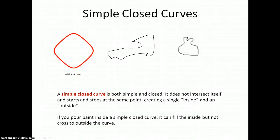You can test if it's simple and closed by thinking about pouring a bucket of paint inside the figure. The paint will spread out and fill up the inside, but it won't cross over into the outside. If it crossed itself, the paint would only fill up one portion, but something that's simple only has one inside to fill up with paint.